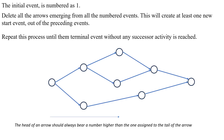Let's see an example of how to give numbers for events of the given network diagram. The initial event is numbered as 1, so here this is the initial event and I have to give it 1. Next, I have to delete the arrows for event 1. These are the new start events and I have to give the numbering in sequential manner from left to right, so next I give 2 and 3.